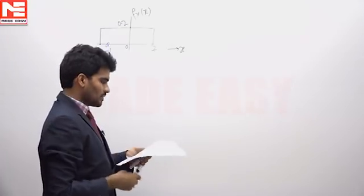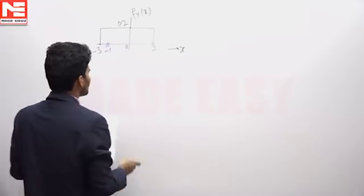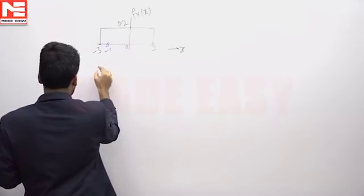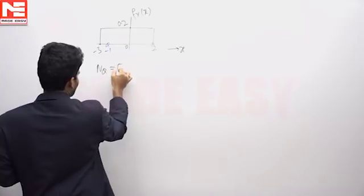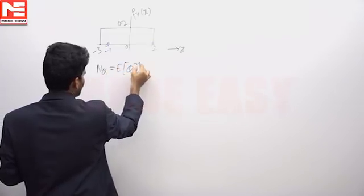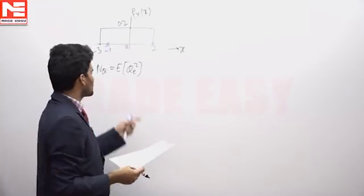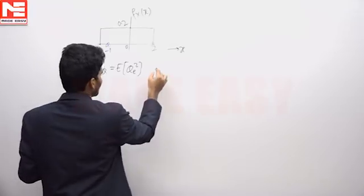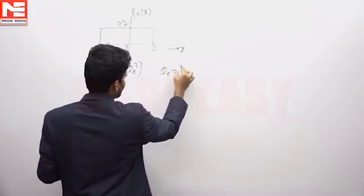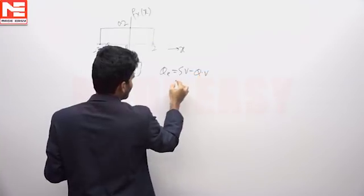And here we have to find out the quantization power. Quantization power, NQ, is the expectation of QE square - the power of QE. Quantization error means quantization error, and we have to find power of QE, that is expectation of QE square. And QE is sampled voltage minus quantization voltage.